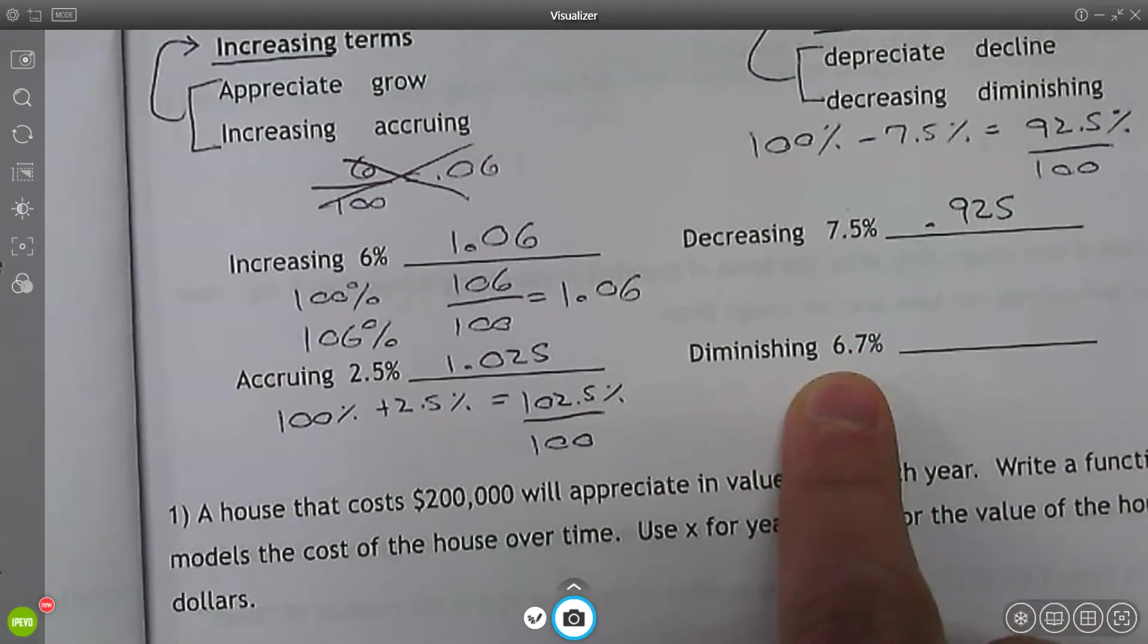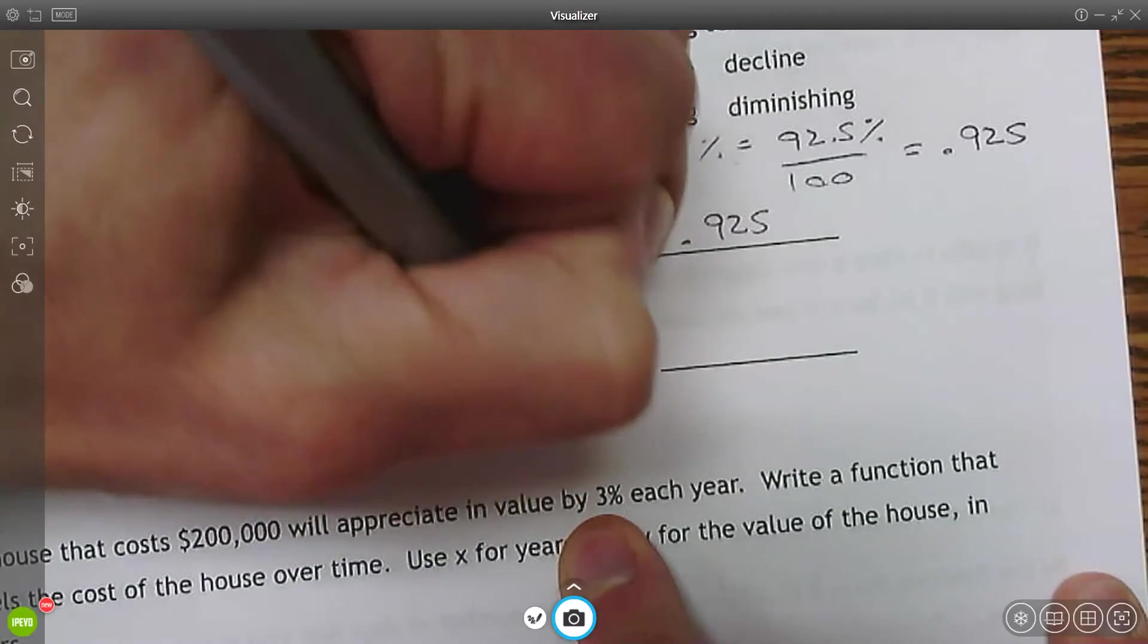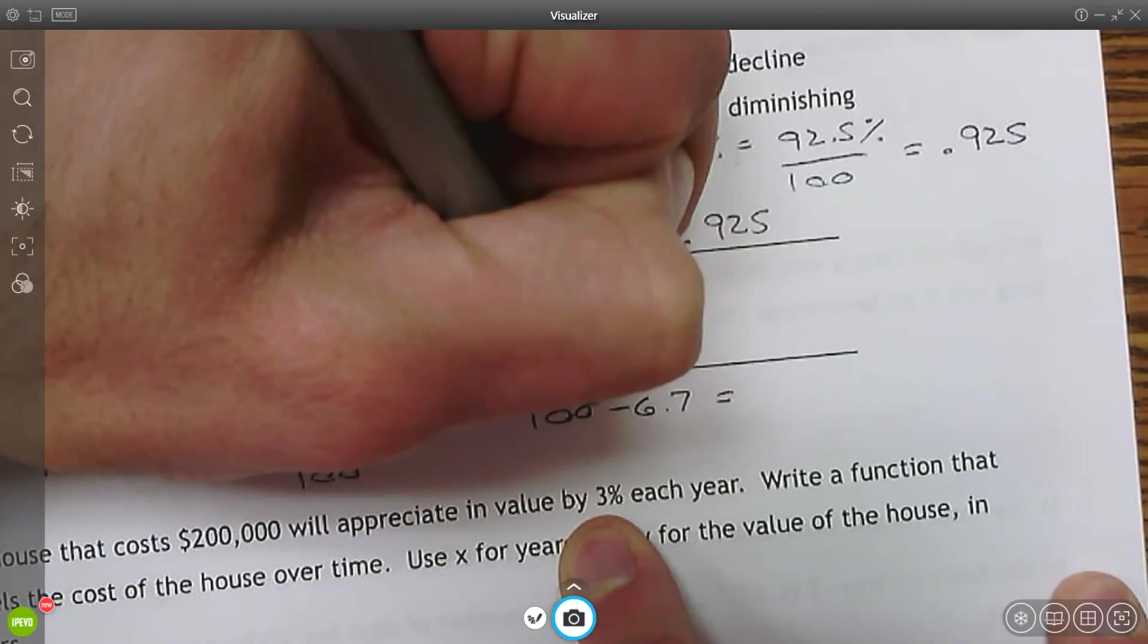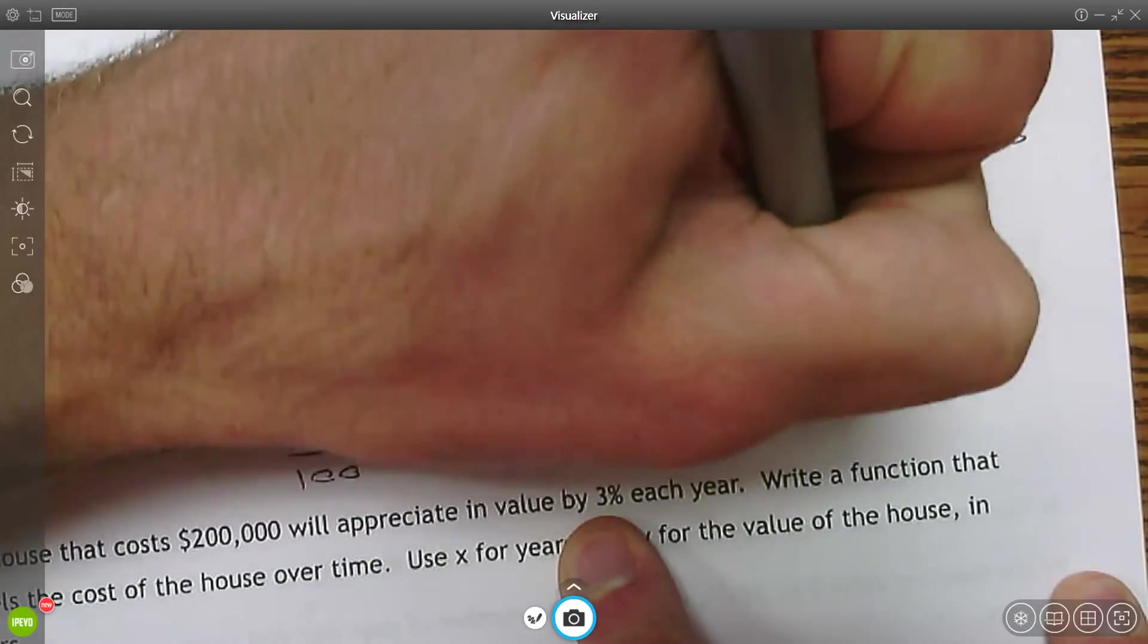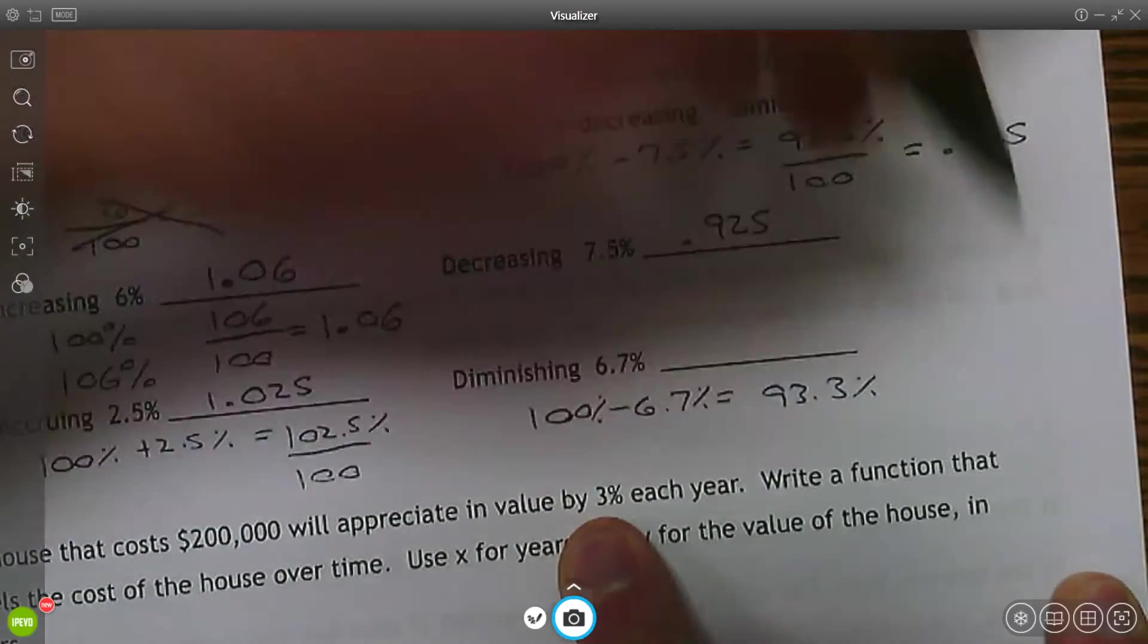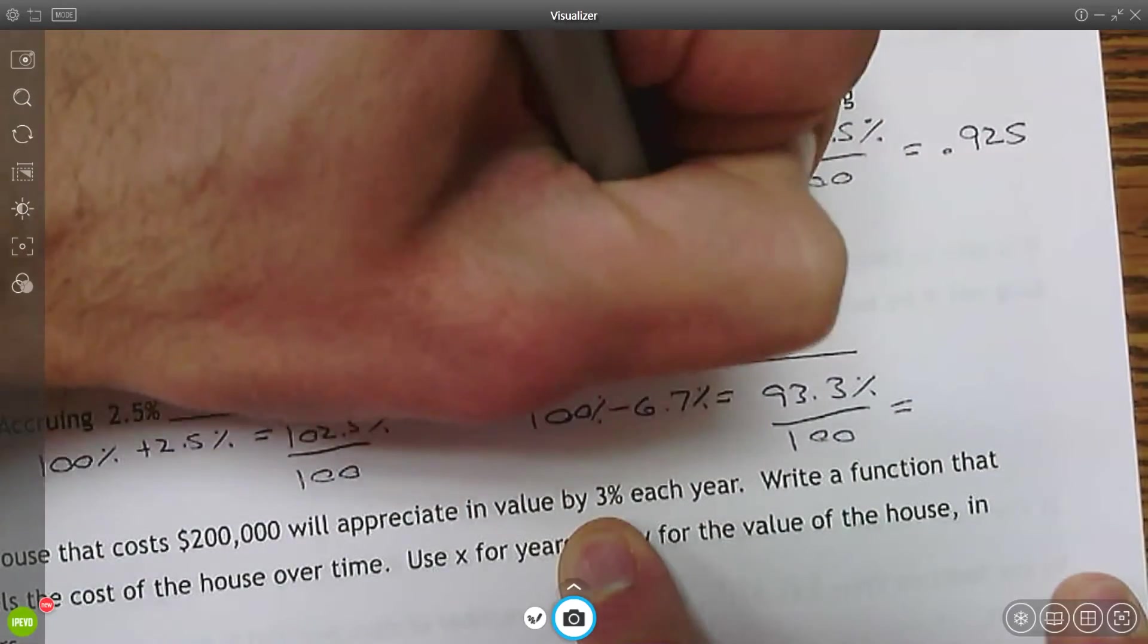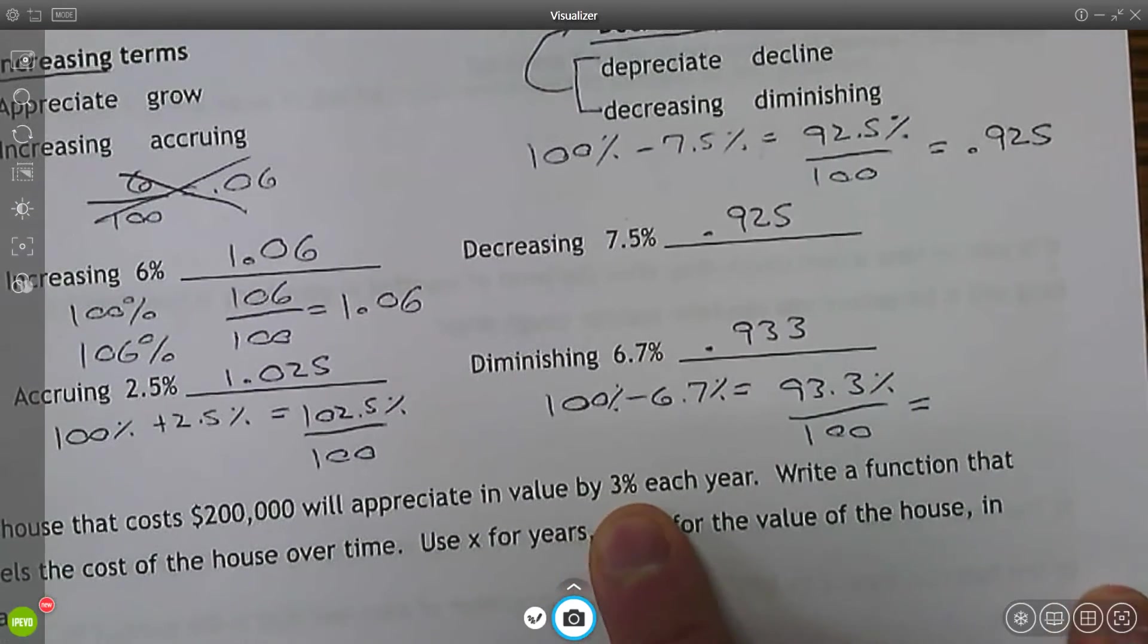The last one, pause the video, see if you could try it on your own. Diminishing means decreasing by 6.7%. So 100% minus the 6.7% is 93.3%. Convert this to a decimal and you get 0.933. So that would be the base.